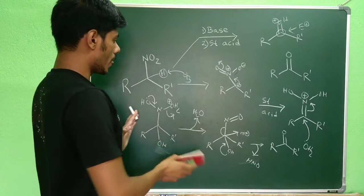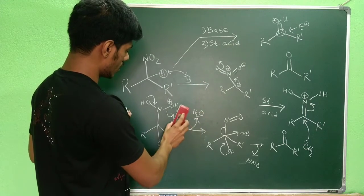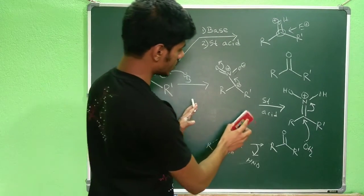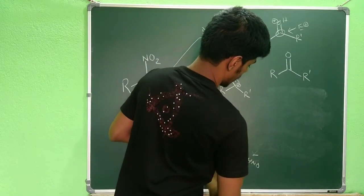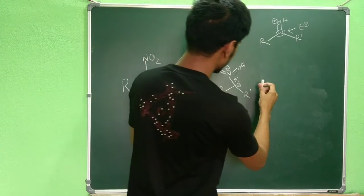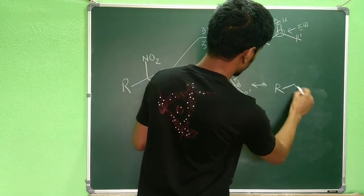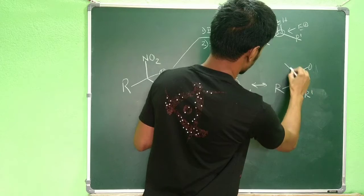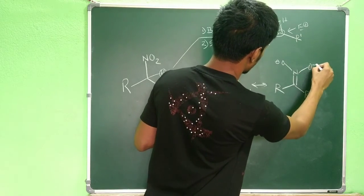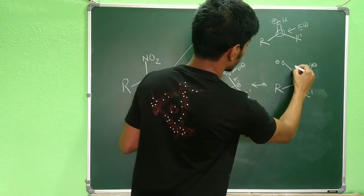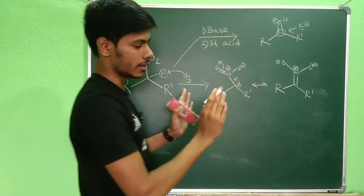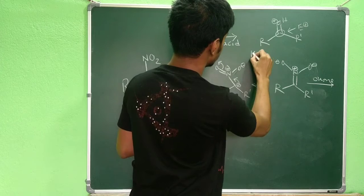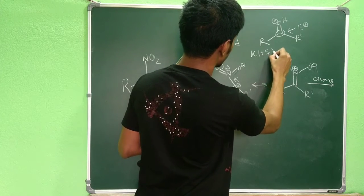Now let us discuss the second procedure which uses oxone. In this case you also first form the nitronate enolate — the same anion formed in pathway one — but the mechanism from here is a bit more interesting. The nitronate oxygen can exist as O-minus or as OH.